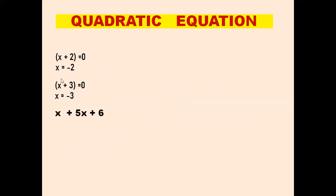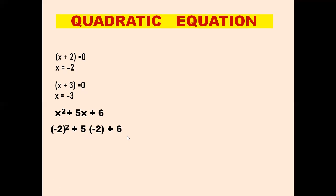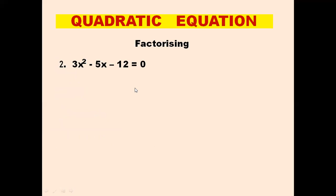We can substitute the values of x to check whether we solved it correctly. Substituting x equals minus 2: (minus 2)² plus 5 times (minus 2) plus 6 equals 4 minus 10 plus 6 equals 0. So this is correct. You can also check with minus 3. Now we move to the next sum.